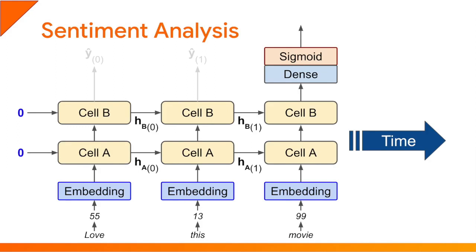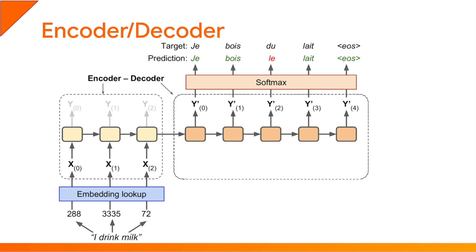Now let's look at automatic translation. A common architecture for automatic translation is the encoder-decoder architecture. Here's a very basic version. The input sentence to be translated, such as 'I drink milk,' is first tokenized and passed through an embedding layer. Then the result is fed to the encoder, which is just a regular RNN. The outputs of the encoder are ignored — at least in this basic version — but the final state of the encoder is fed as the initial state to the decoder, which is also a regular RNN. The decoder's job is to produce the translation one token at a time, ending with a special end-of-sequence token, or EOS.